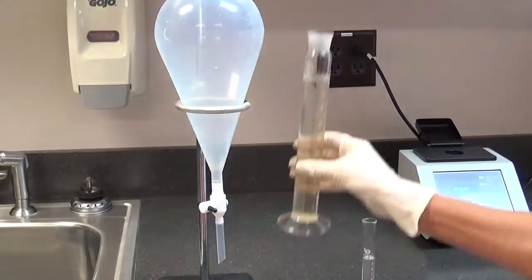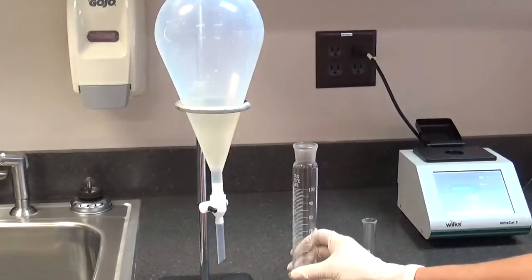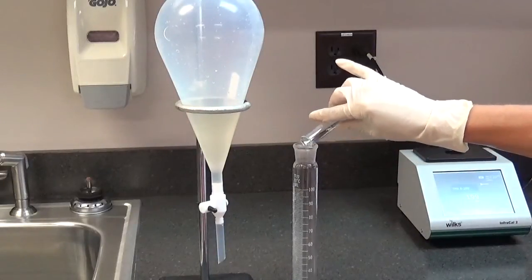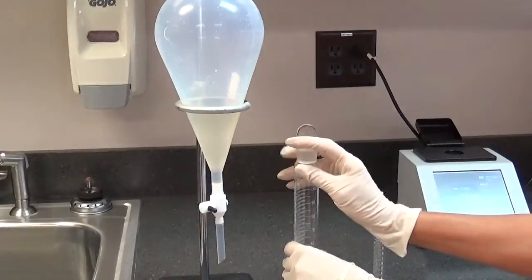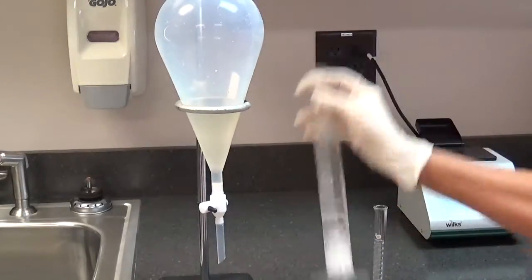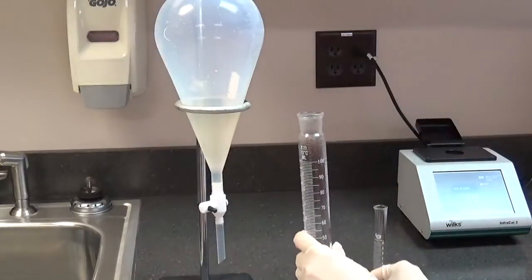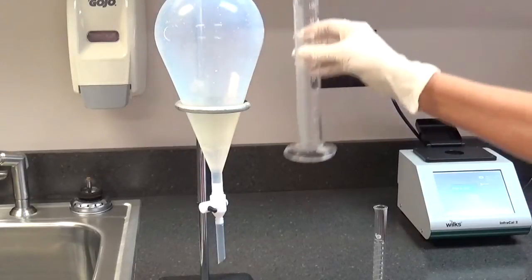Pour a measured amount of sample into the separatory funnel. Pour a measured amount of solvent into the graduated cylinder to clean out any residual oil. Shake and pour into the separatory funnel. In this example, we are using 100 ml of sample and 10 ml of solvent.